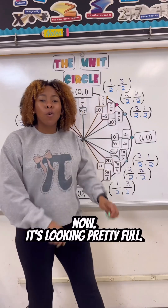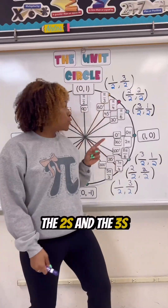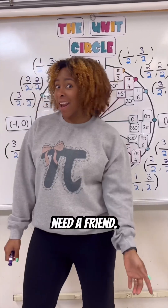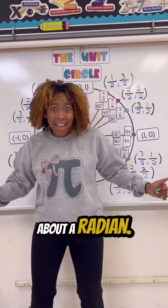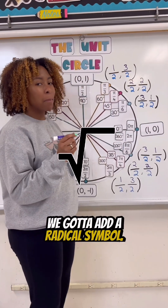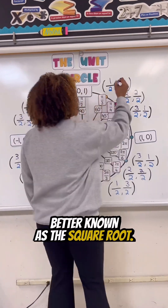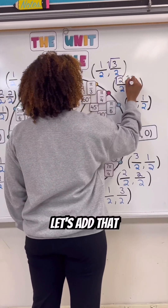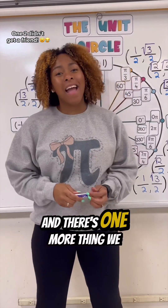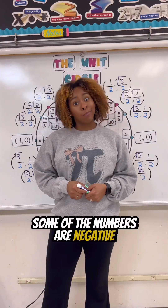Now it's looking pretty full. There's just two more things we have to do. The twos and the threes on the top need a friend, and I'm not talking about a radian. We gotta add a radical symbol, better known as the square root. Let's add that to the twos and threes. Then there's one more thing we have to do — some of the numbers are negative.